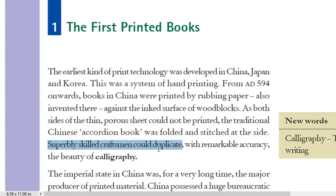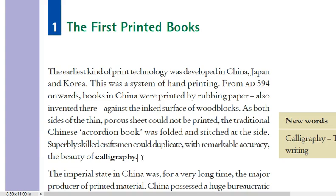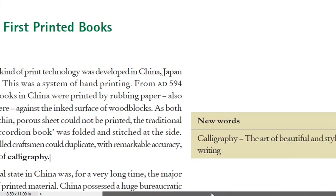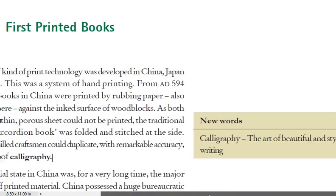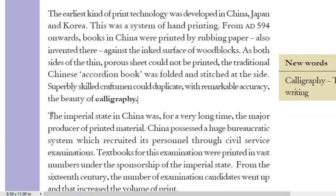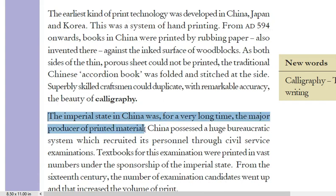Superbly skilled craftsmen could duplicate with remarkable accuracy and beauty of calligraphy. Many skilled craftsmen could copy the text of a book with remarkable accuracy, using very beautiful handwriting — which is called calligraphy. The imperial state in China was for a very long time the major producer of printed material.